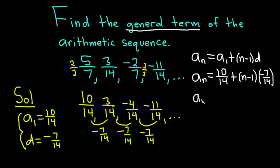So a sub n is equal to, let's clean this up, this is 10 over 14. Negative 7 over 14 times n is negative 7 over 14 times n. And negative 7 over 14 times negative 1 is positive 7 over 14.